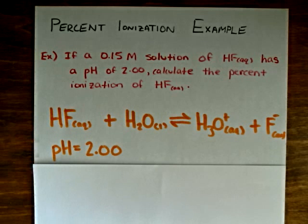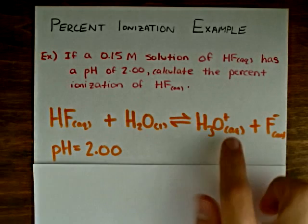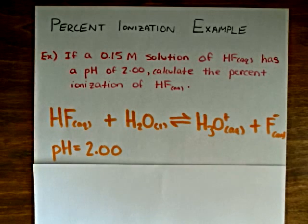So if we recall how to calculate percent ionization, percent ionization is just the ratio between the concentration of the associated species, in this case the hydronium ion, divided by the total concentration of the acid, which we were given, 0.15 moles per liter, times 100%.